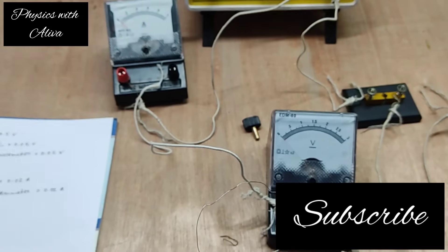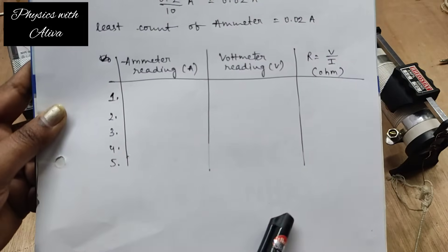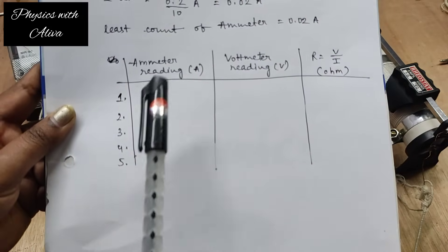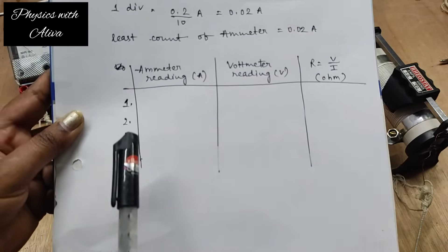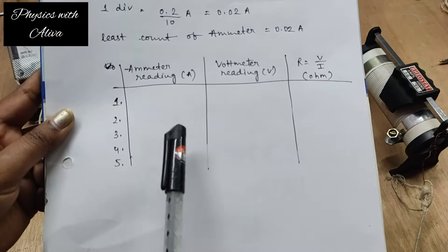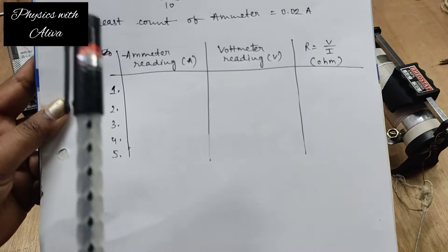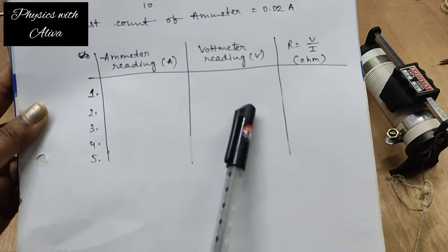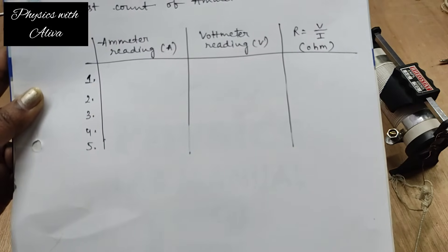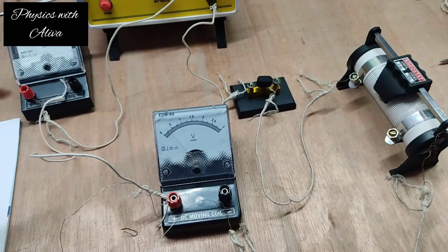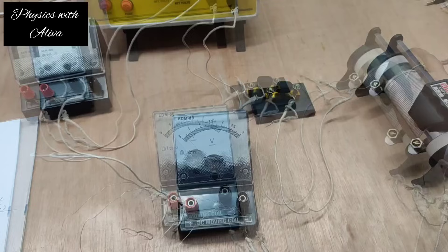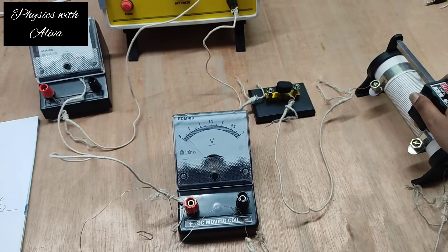Now we have to take the readings. We have to take ammeter reading and voltmeter reading. By changing the resistance of the rheostat we will take ammeter readings and corresponding voltmeter readings. I am connecting the key — now the voltmeter and ammeter are giving readings. We have to change the position of the rheostat to take different readings. We have to place our eye exactly perpendicular so that we can see the reading clearly.